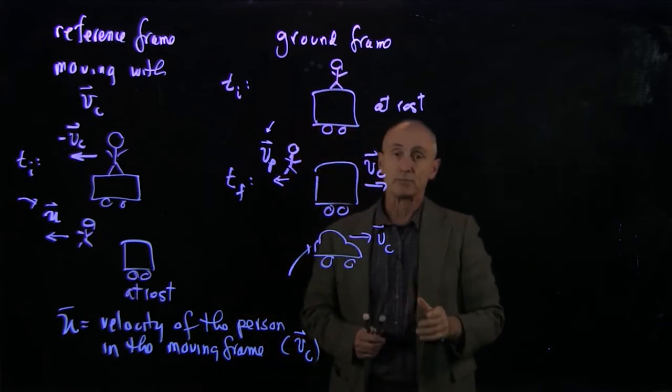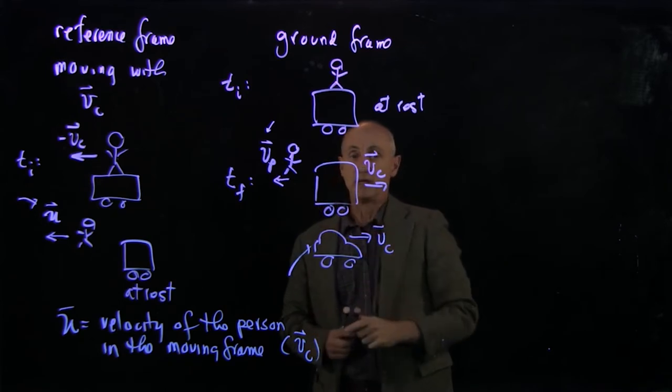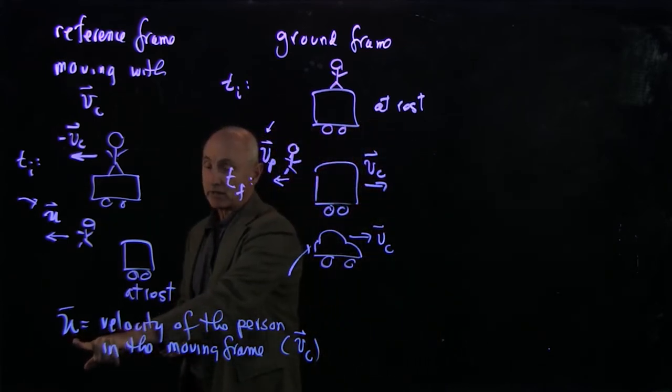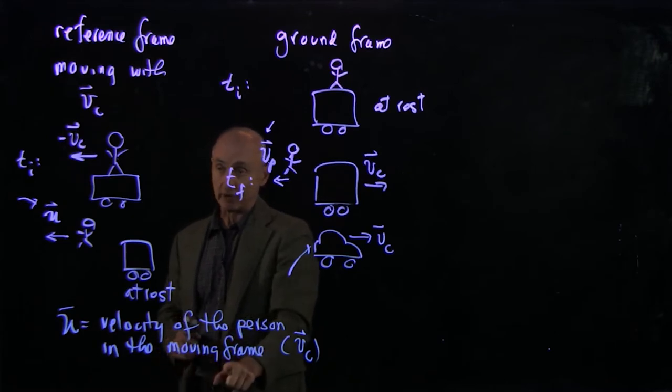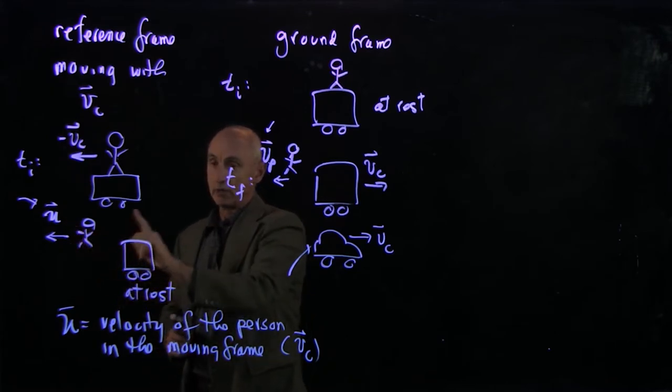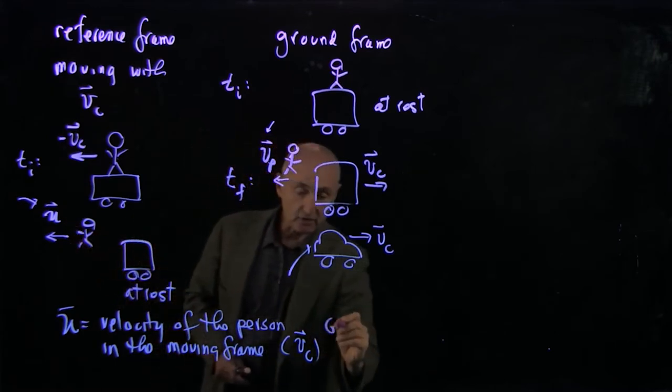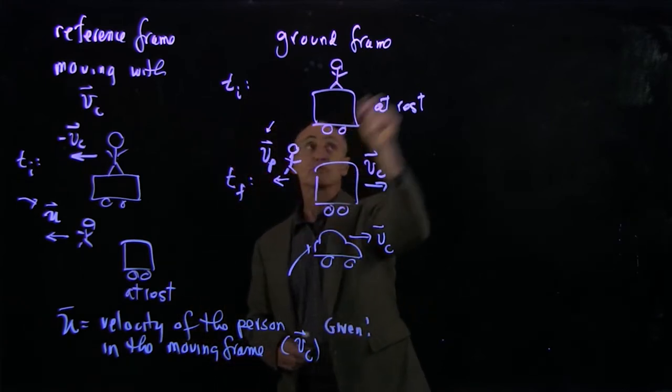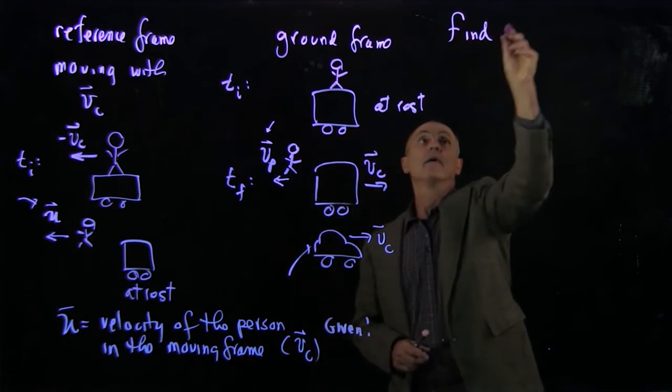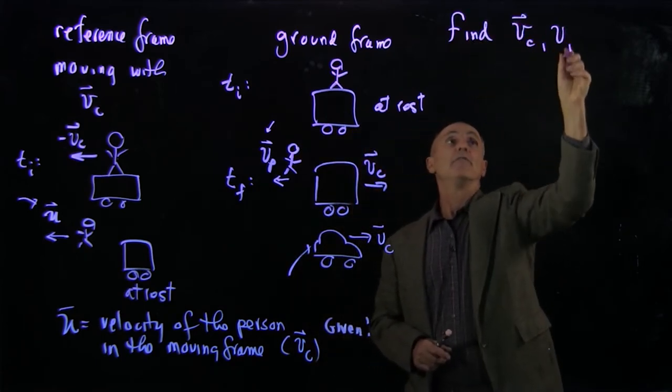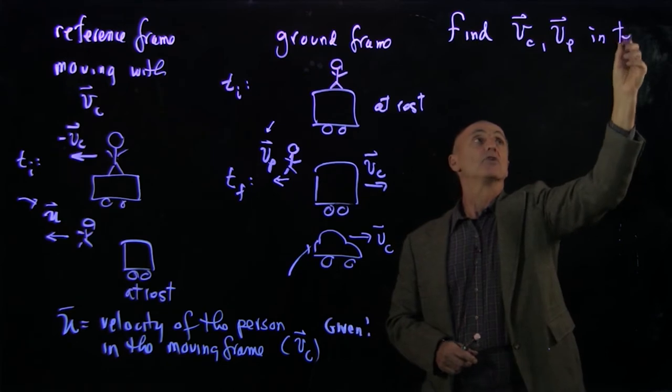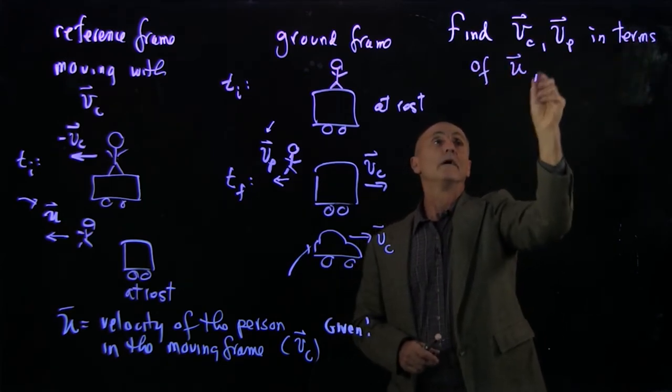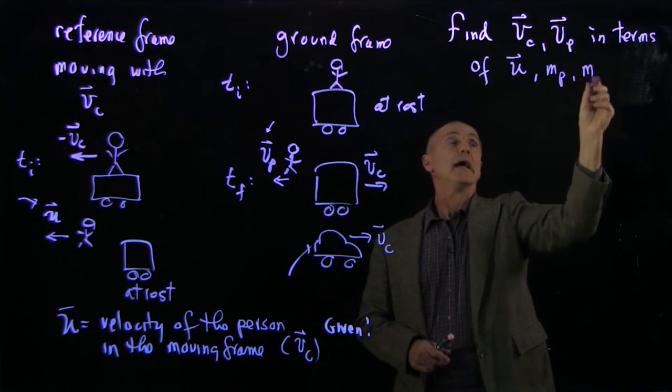Now we would like to apply the momentum principle to solve for vp and vc. We are given that the velocity of the person in the moving frame, u, will treat this as a given quantity. And we'll express the velocity vc, and so we want to find vc and vp in terms of u, mp, and mc.